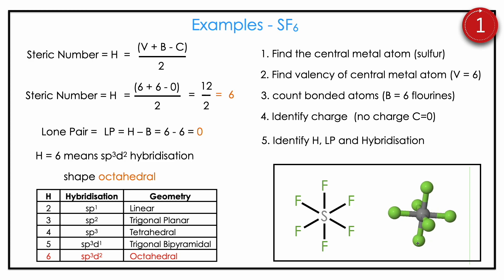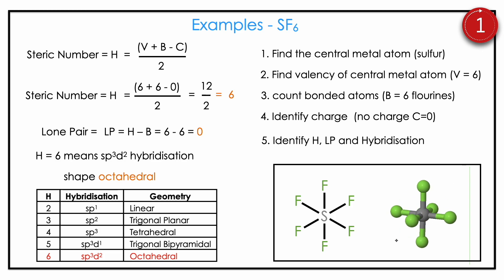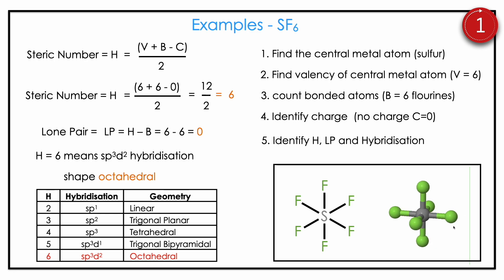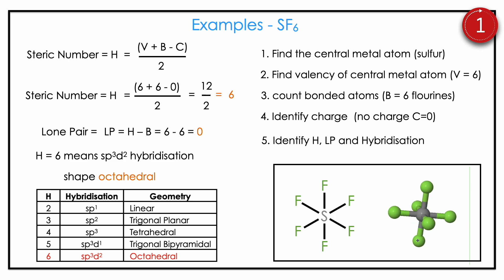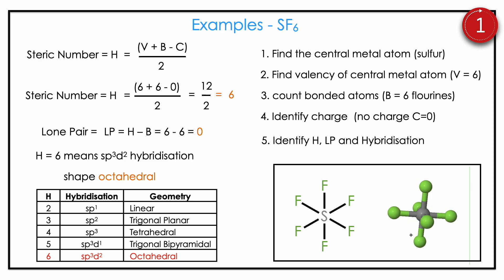Then SF6 — sulfur is the central metal atom (oxygen family), valence is 6, bonded atom is fluorine which is 6, no charge. H = (6 + 6 − 0) / 2 = 12 / 2 = 6. Lone pair = 6 − 6 = 0. H = 6 means sp3d2, which is octahedral. The 3D animation shows sulfur in the middle, four fluorines on the plane, one above, one below — a perfect octahedral shape. So the shape of SF6 is octahedral.